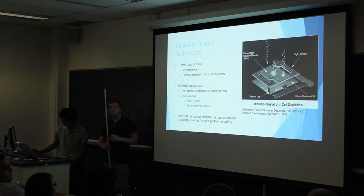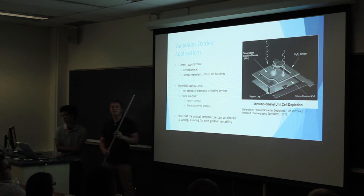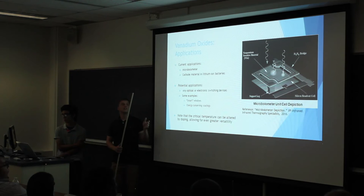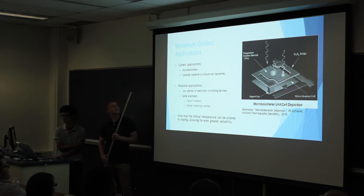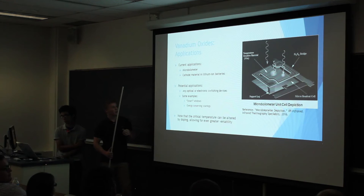Moving on to some applications. Currently, vanadium oxides are used in some applications — one of these is actually a microbolometer, which uses the sensitivity of the resistance of these vanadium oxides in relationship to temperature to measure the emission that's hitting it. So these can be used in things such as infrared cameras. Some vanadium oxides are also used as cathode materials in lithium-ion batteries. You can see that some of the current applications are a bit more focused on the electronic properties.